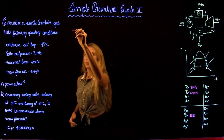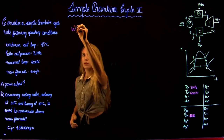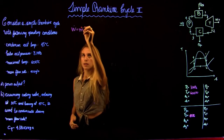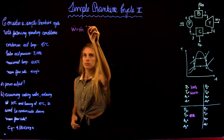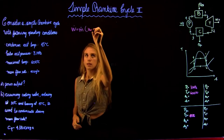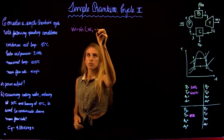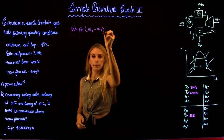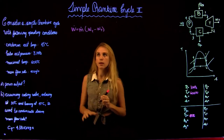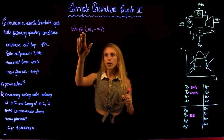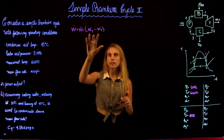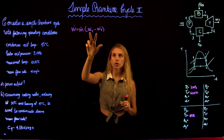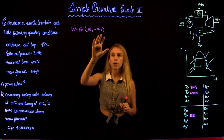The power output is given by the following equation: the mass flow rate times the work of the turbine minus the work of the pump. We have the mass flow rate and we need to get the work of the turbine and the pump.